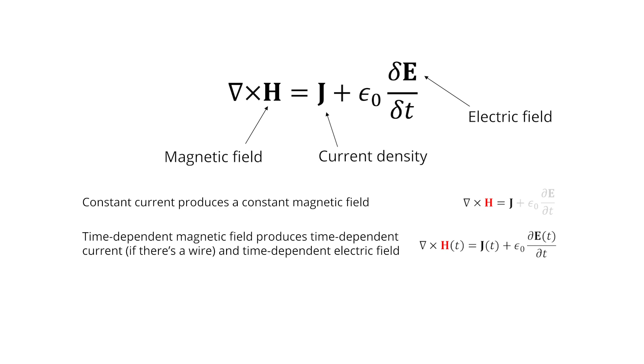But along with the time-dependent current, you're also going to generate a time-dependent electric field. The third situation I'd like to describe, and that which is most important for this class, is the case where you have a current that's time-dependent. If you have a current that's not constant with respect to time, you're going to generate time-dependent electric and magnetic fields. In other words, an electromagnetic wave.